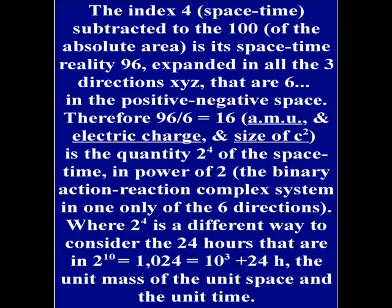The index 4, that is space-time, subtracted from the 100 of the absolute area, is its space-time reality: 96, expanded in all the three directions of the Cartesian system, which are 6 in the positive and negative space. Therefore, 96 divided by 6 equals 16, and is the unit of the atomic mass unit, but also of the electric charge and also the size of C2.